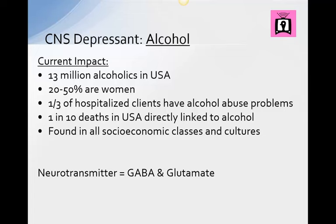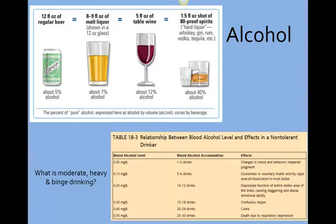Alcohol is metabolized in the liver — approximately one drink takes an hour to metabolize. Elimination occurs through the kidneys and lungs. One standard drink contains roughly 14 grams of pure alcohol: a 12-ounce beer has about 5% alcohol, 5 ounces of wine is approximately 12%, and an ounce and a half of hard liquor is 40% alcohol.